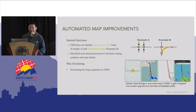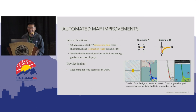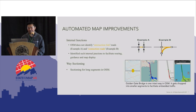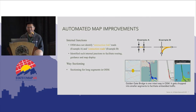Here's an example of the automatic map improvements that we have. This example is the Golden Gate Bridge, where in OSM it's drawn as one long segment, but for our app we have it segmented into multiple sections to help improve the traffic information. That's not changed in OSM, but we take that data and break it down for our use to improve our navigation experience.